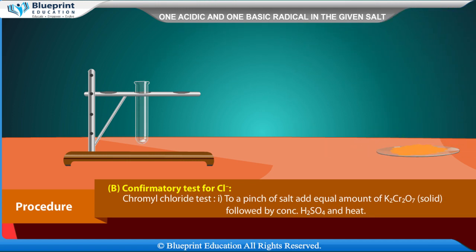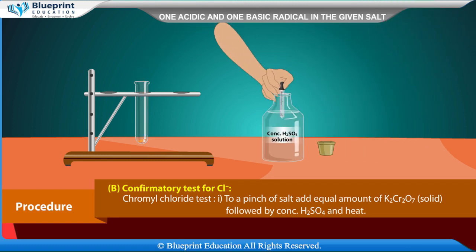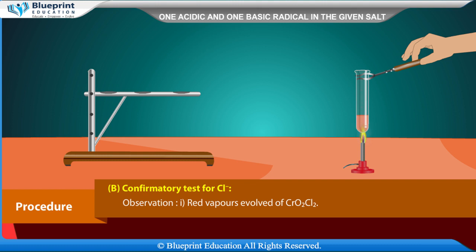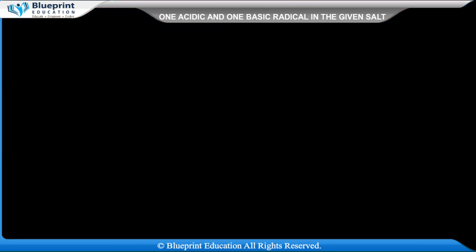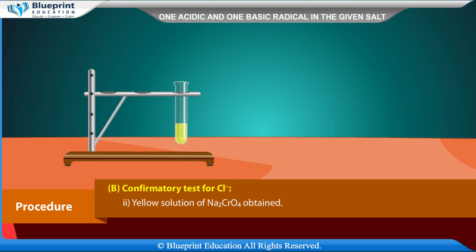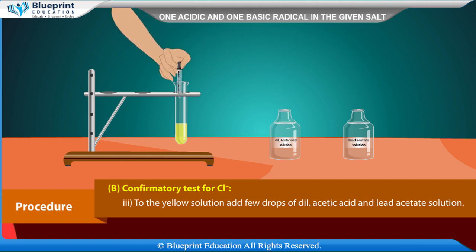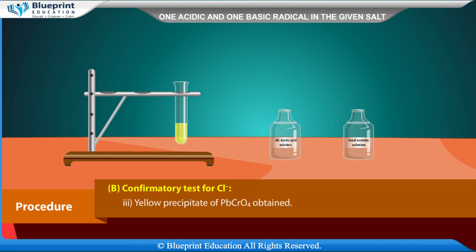Confirmatory test for Cl-: to a pinch of salt, add equal amount of K2Cr2O7 solid followed by concentrated H2SO4 and heat. Observation: red vapors of CrO2Cl2 evolved — Cl- confirmed. Pass the red vapors through NaOH solution. Observation: yellow solution of Na2CrO4 obtained — Cl- confirmed. To the yellow solution, add few drops of dilute acetic acid and lead acetate solution. Observation: yellow precipitate of PbCrO4 obtained — Cl- confirmed.